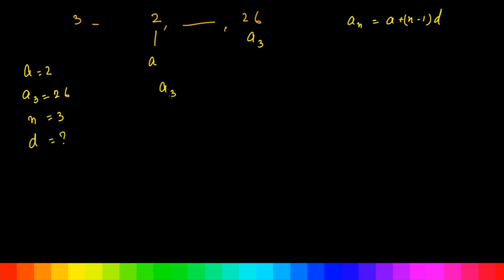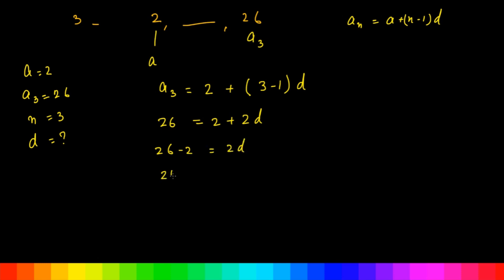Putting the values in the formula: A3 = 2 + (3 - 1)D. That gives 26 = 2 + 2D. So 26 - 2 = 2D, which means 24 = 2D. Therefore D = 12.